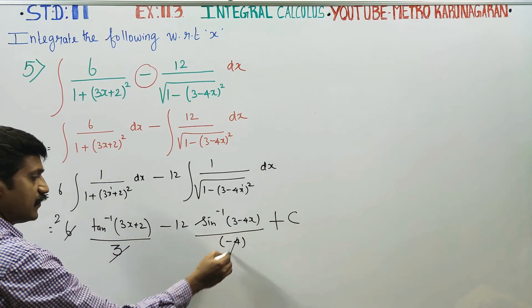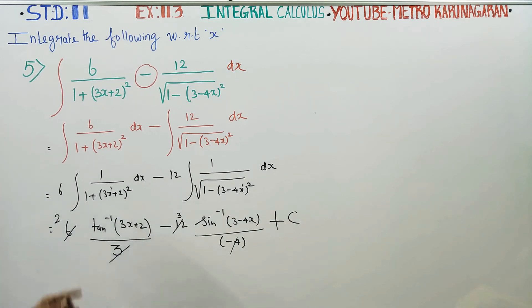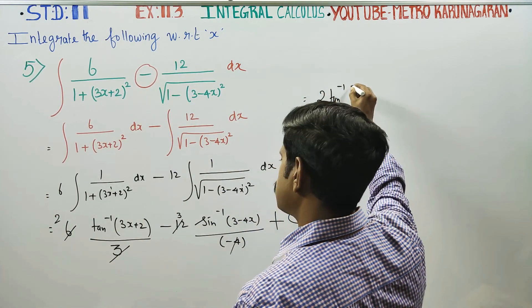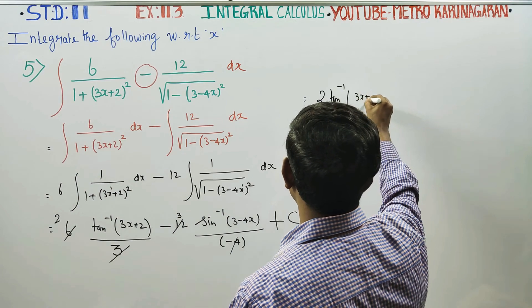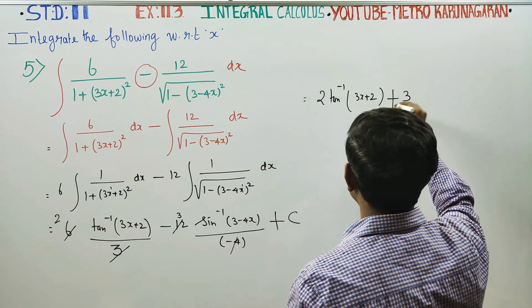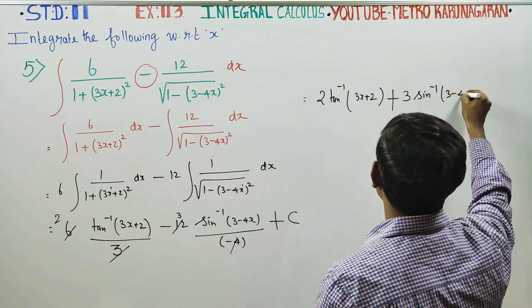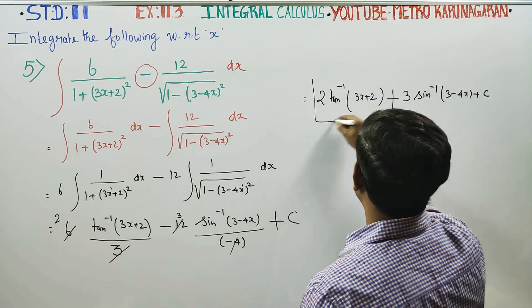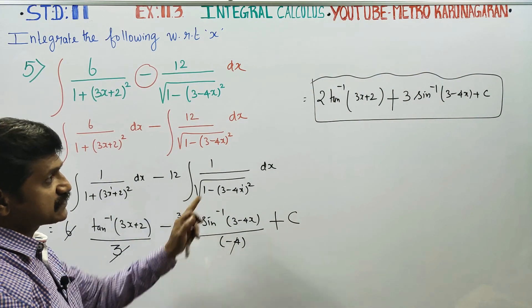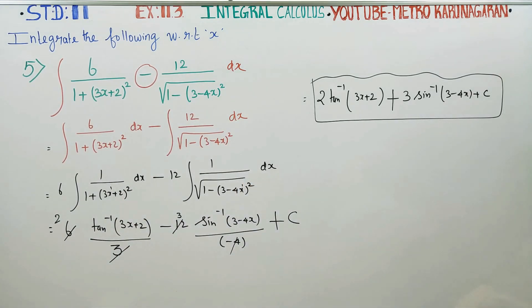Applying the linear function rule: cancel 2 times in the first part and 3 times in the second, giving a factor of 3 and 4, so 3 times 4 is 12. Minus minus becomes plus. Therefore, your final answer is 2 times tan inverse of (3x plus 2) plus 3 times sin inverse of (3 minus 4x) plus c.